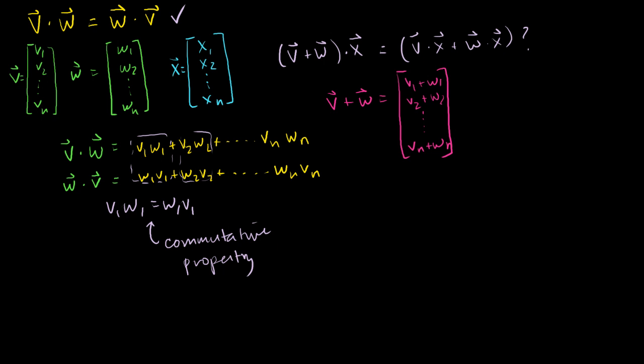That's that right there. And then when we dot that with x1, x2, all the way down to xn, what do we get? Well, we get v1 plus w1 times x1 plus v2 plus w2 times x2, plus all the way to vn plus wn times xn. Right? I just took the dot product of these two. I just multiplied corresponding components and then added them all up. That was the dot product. This is v plus w dot x.